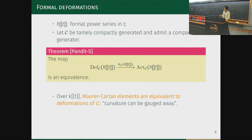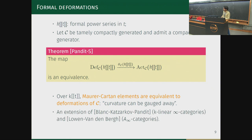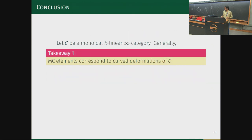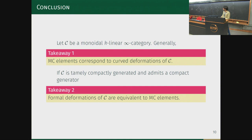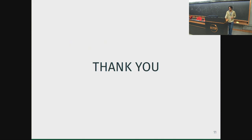This result is an extension of a similar result by Blanca, Zarco and Pandit for Calabi-Yau categories and Leuven-Vandenberg for A-infinity categories. In conclusion: if C is a monoidal Calabi-Yau category, Maurer-Cartan elements correspond to curved deformations in general, but if C satisfies a suitable hypothesis then formal deformations of C are equivalent to Maurer-Cartan elements. Thank you.